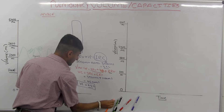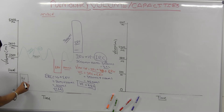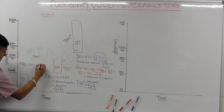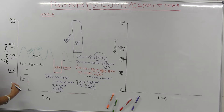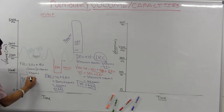Functional residual capacitance (FRC) is ERV plus residual volume: 1100 ml plus 1200 ml equals 2300 ml, or 2.3 liters. This is the amount of air remaining in the lungs after a normal passive exhalation.